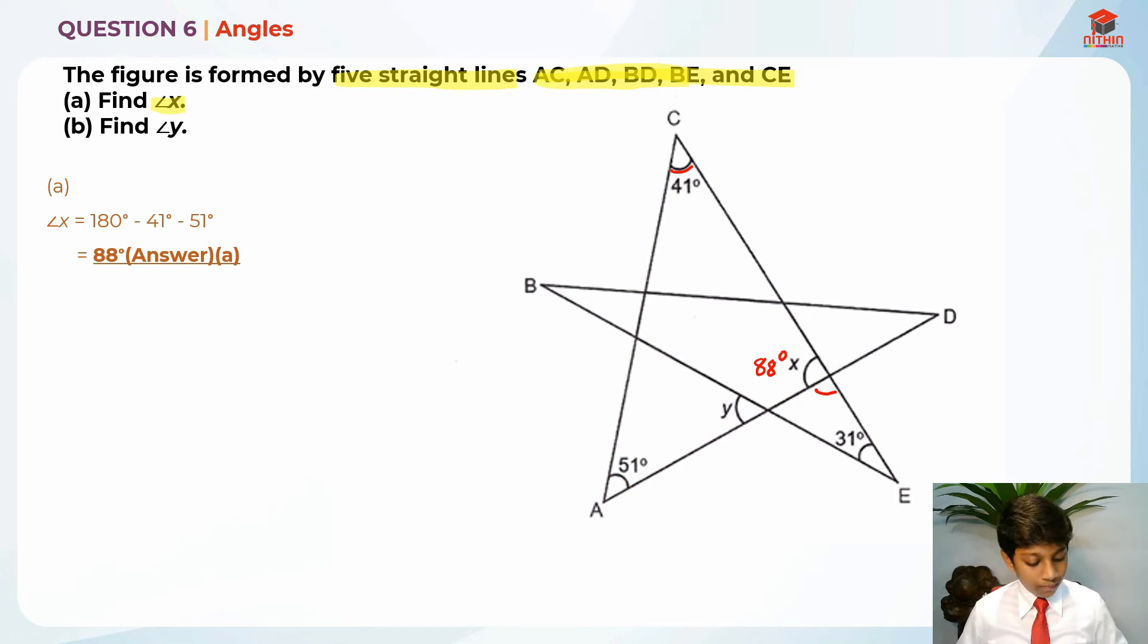We can find this angle. We know that this is also a straight line. So you know that in a straight line, it's actually 180 degrees. So in order to find this angle, we just take 180 degrees minus 88 degrees. It will give us 92 degrees. Let me write it down, 92 degrees.